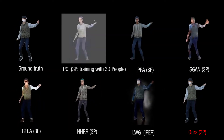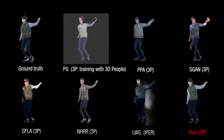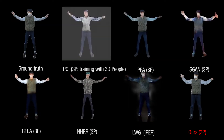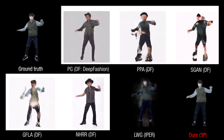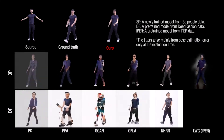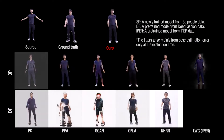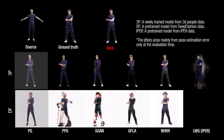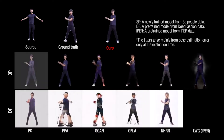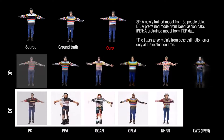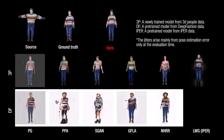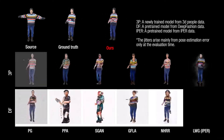Compared to the state of the art, our method can better preserve the person identity and appearance in a temporally coherent way. We also evaluate the model trained from DeepFashion by the authors. Here, 3P means a model newly trained from 3D People synthetic data, and DF and IPER mean pre-trained models from the DeepFashion and IPER datasets by the authors. Note that the jitters arise mainly from pose estimation error only at evaluation time.